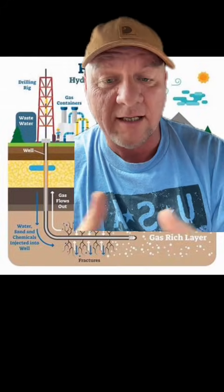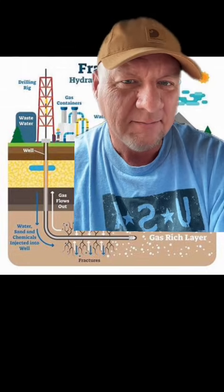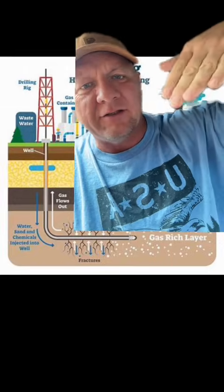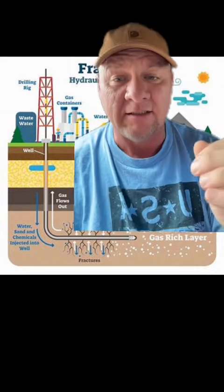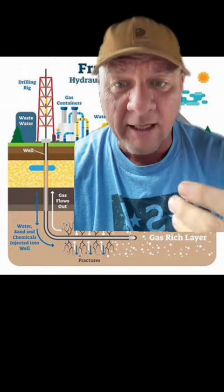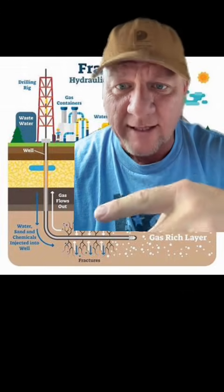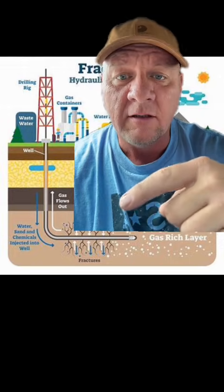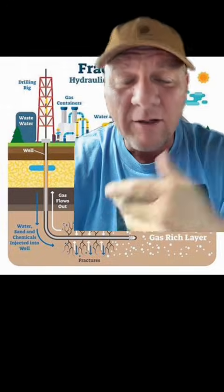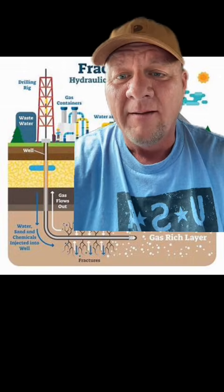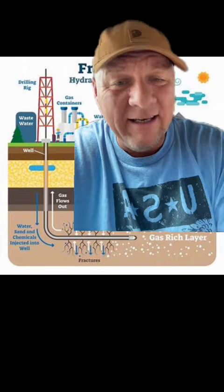One of the most common questions I get on this app: how do they drill sideways? How do they take pipe and turn it and just go that way? One of the problems is these illustrations, like the one behind me here. If you look down here, this well is drilled down and then it's a fairly sharp turn to the horizontal section of the well. That's not what it looks like in real life — that's just for illustrative purposes.